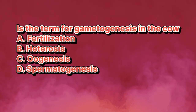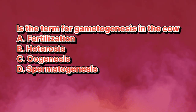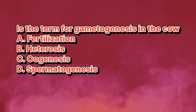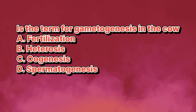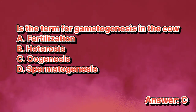What is the term for gametogenesis in the cow? A. Fertilization. B. Heterosis. C. Oogenesis. D. Spermatogenesis. The answer is letter C.